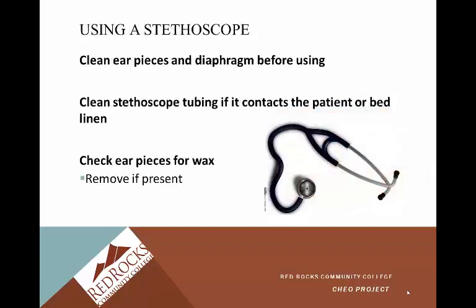We're going to be using a stethoscope for our blood pressure skill. It's important to be aware of user errors that can result from using a stethoscope. If you can't hear anything, it could be that your earpieces are not facing the right direction, or you have it on bell when you're trying to listen on the diaphragm side. Part of your blood pressure skill on the skills test is to clean the earpieces and diaphragm before using — good infection control. Contamination from patient to patient is one source of concern.